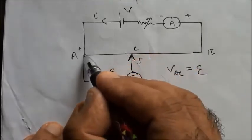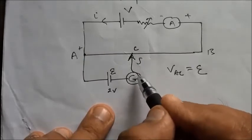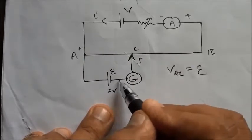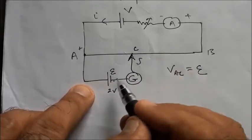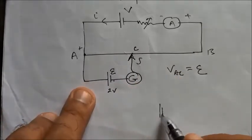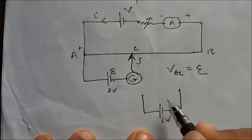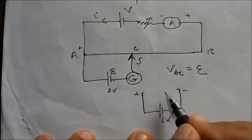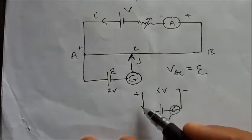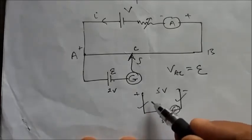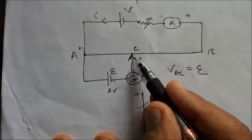Say this cell has an EMF of 2 volts, and the potential difference between those two points on the wire is also 2 volts. Then no current will flow through the galvanometer branch, because the potential difference is the same on both sides — just like two batteries of equal voltage opposing each other. This is the null point condition.